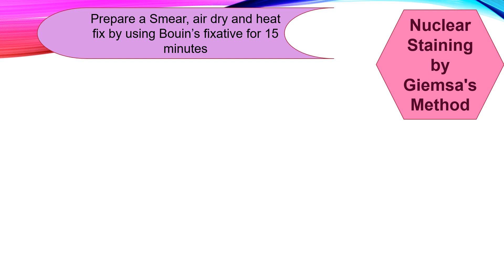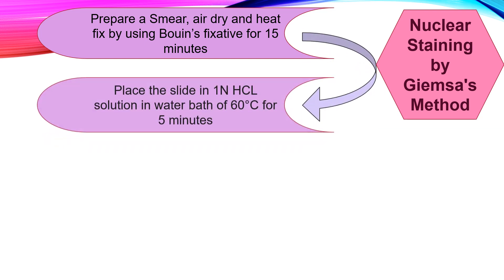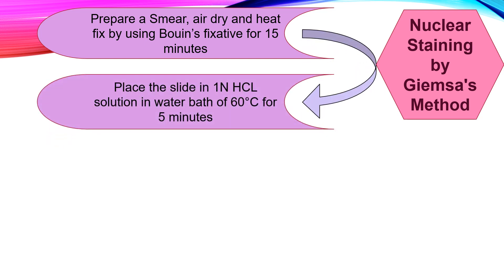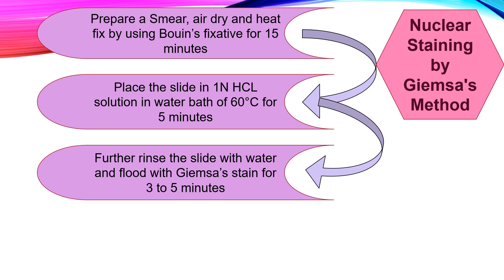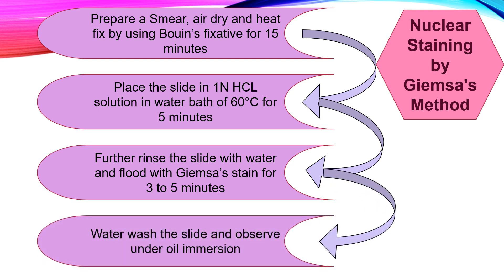In summary, the flow chart of nuclear staining by Giemsa's method is: prepare a smear and fix with Bouin's fixative for 15 minutes; treat with one normal HCl in a water bath at 60 degrees Celsius for 5 minutes; rinse with water and flood with Giemsa stain for 3 to 5 minutes; then water wash and observe under oil immersion.